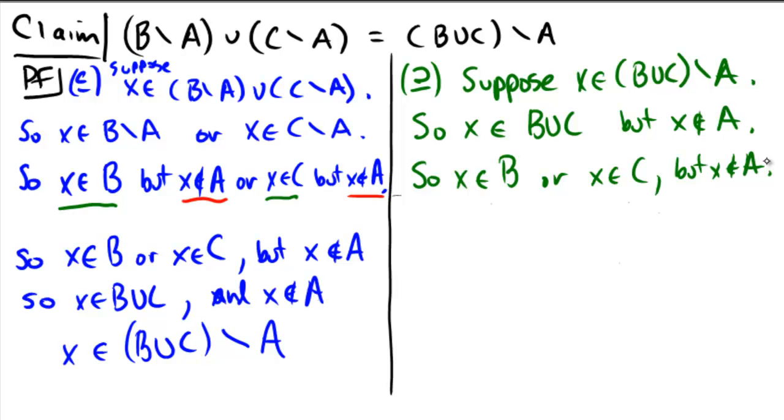So, since we have either b or c, it's now logically equivalent to call upon this statement. We can say that x is in b, and x is not in a, because we know definitely x is not in a, or potentially x is in c, and x is not in a. And can you see how we're going to get there now? It's almost done.